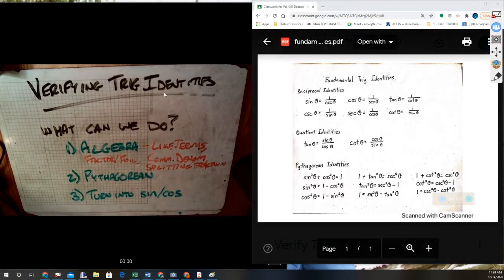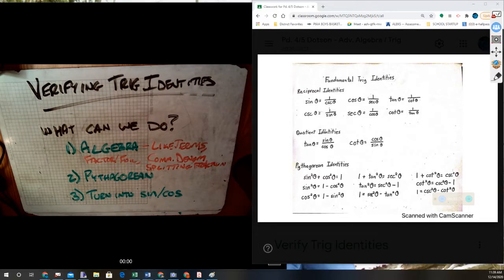equals sine over cosine. Or secant equals one divided by cosine. Those are the different reciprocal and quotient identities to use to make the problem easier by getting everything into just those two trig functions.